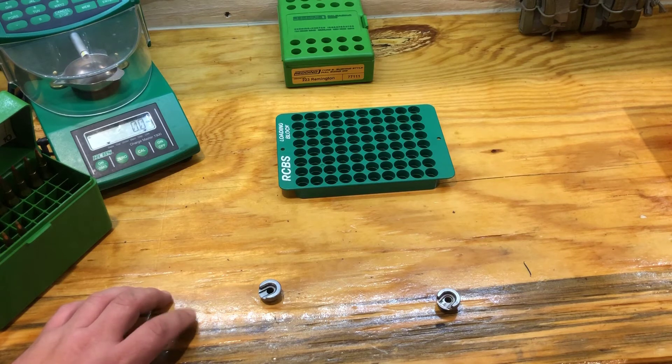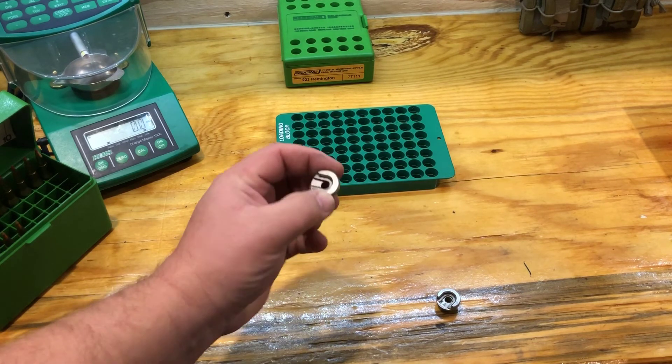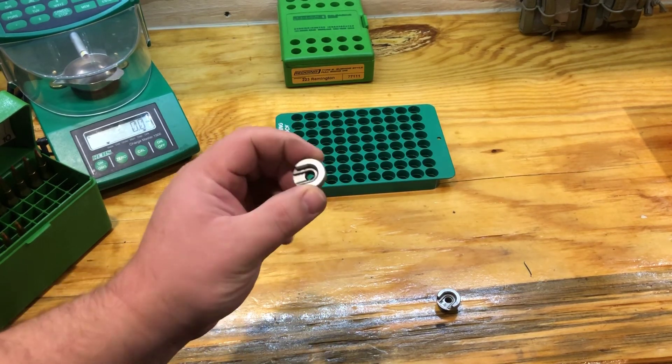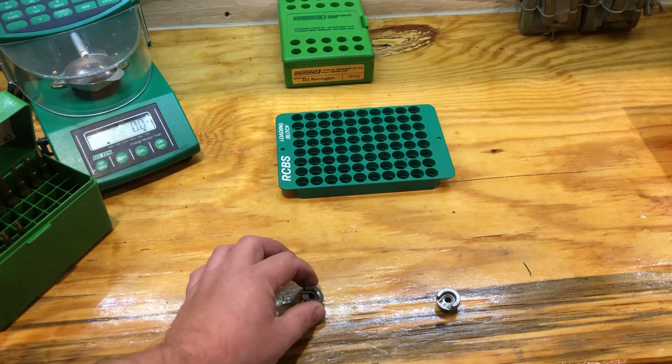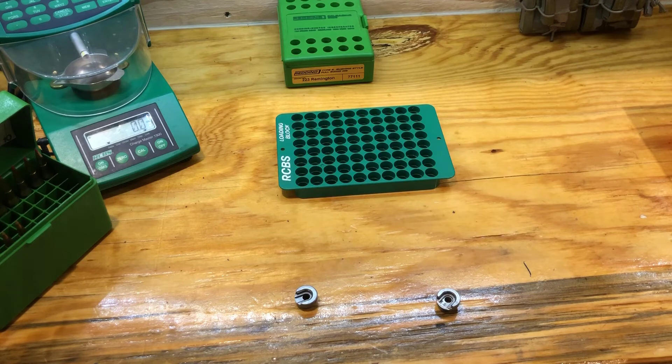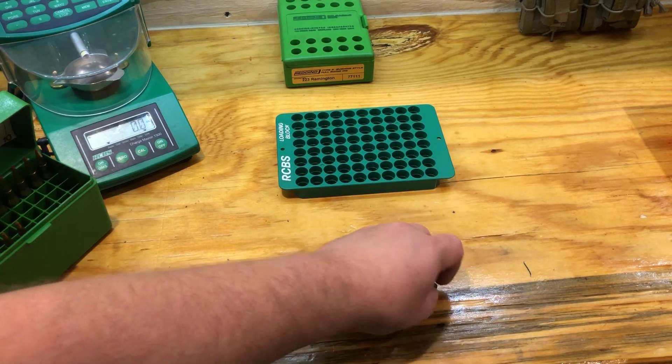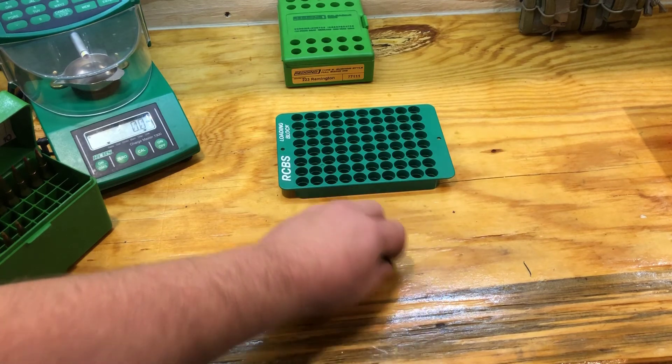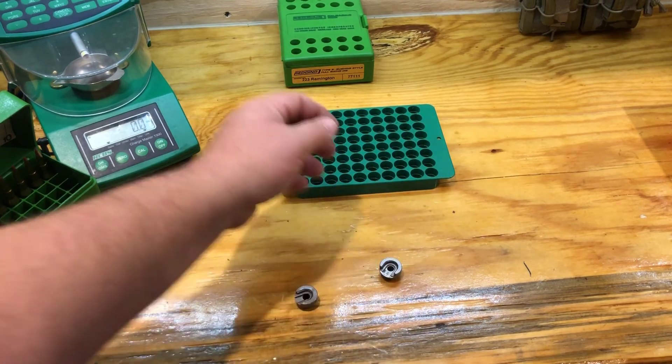Redding actually makes a competition set that offers shell holders in multiple different thicknesses, so you can fine-tune headspace. Another trick some folks will do, they'll take one of these and they'll actually take it on a stone and just hone it down to give themselves a little bit more room.